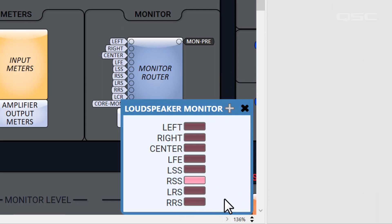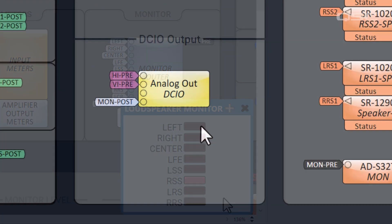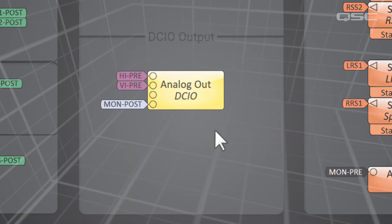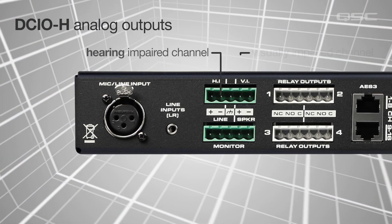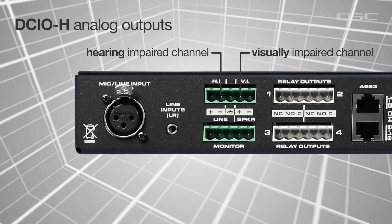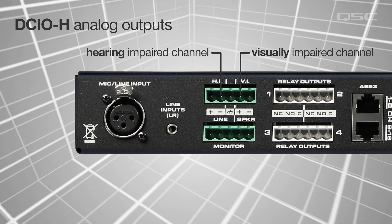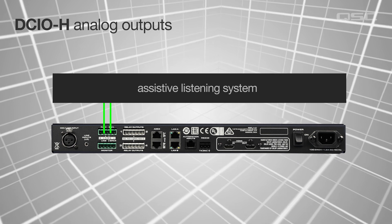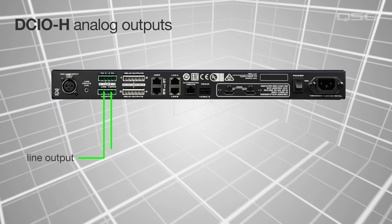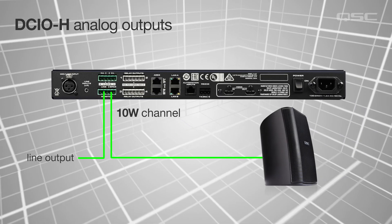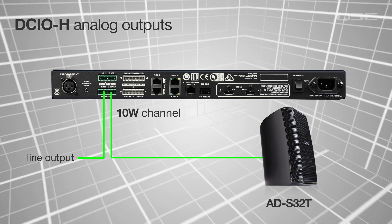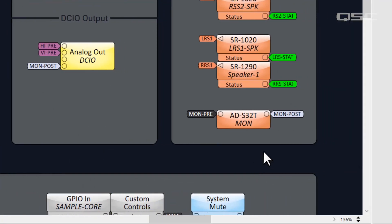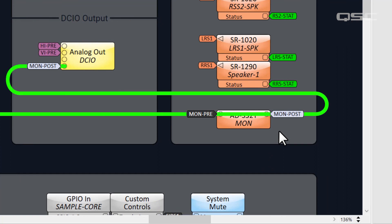Also in the output section are the DCIO analog output channels. The back of the DCIO has analog output channels that deliver the hearing impaired and visually impaired audio tracks to your assistive listening systems. There's also a generic line out as well as a monitor out with a 10-watt amplifier built in for a local monitor in the projection booth. In our design, we've added the voicing for the ADS32T loudspeaker to this monitor output.